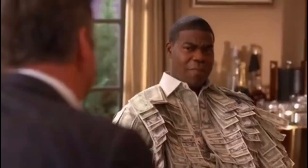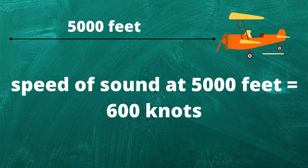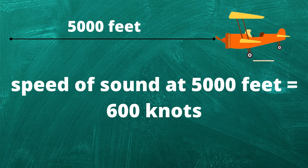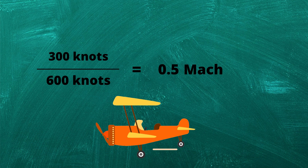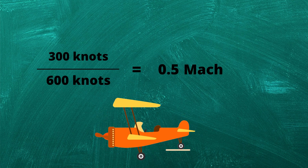Let's talk about Mach number. What is Mach number and what's the relation between Mach number and the speed of sound? Mach number is the ratio of your speed to the speed of sound. To calculate Mach number, you divide your speed by the speed of sound at your altitude. For example, if you were flying at 5,000 feet and your speed is 300 knots, and the speed of sound at that altitude is 600 knots, you divide 300 by 600. That gives you 0.5, meaning you're traveling at half the speed of sound.